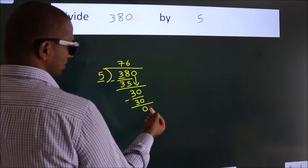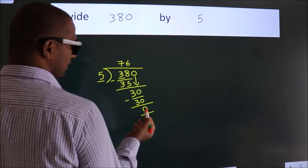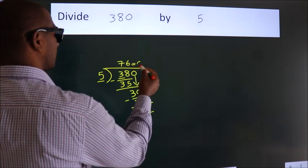After this, no more numbers to bring it down. And we got remainder 0. So, this is our quotient.